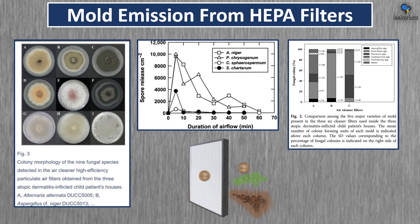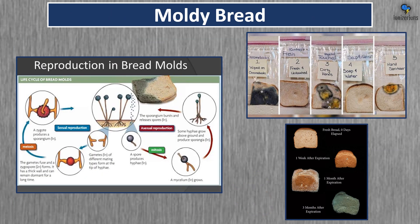Mold can grow on your HEPA filter and be emitted back into the air — this is why we must keep HEPA filters clean. Mold grows on bread in every home in the world. We should use soap to wash our hands to keep them clean of mold.